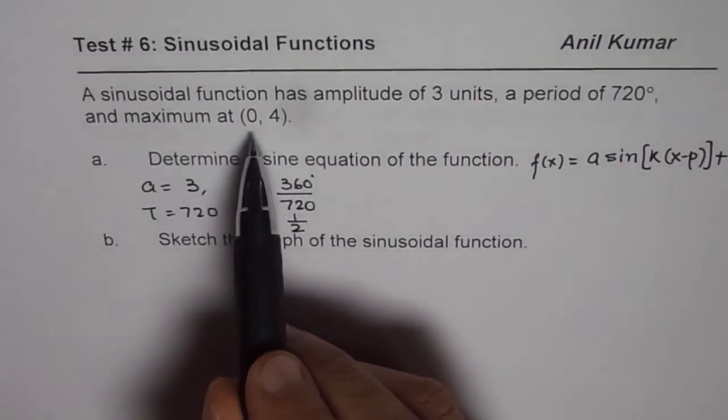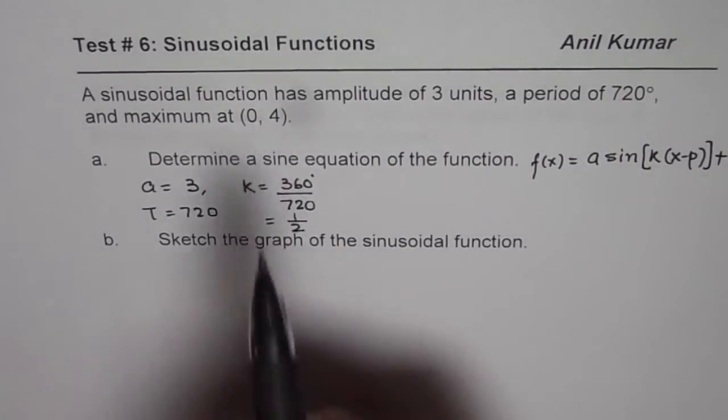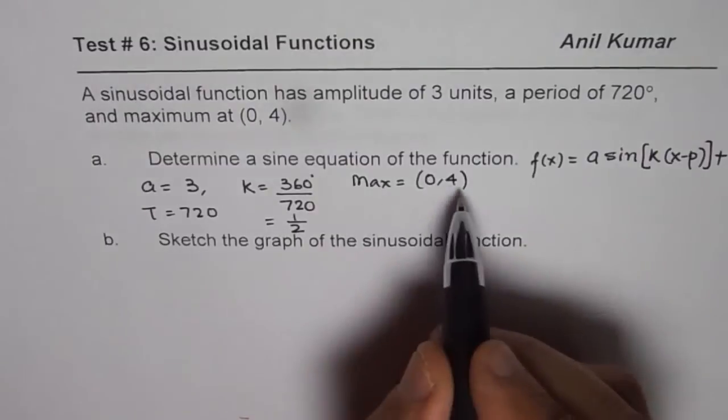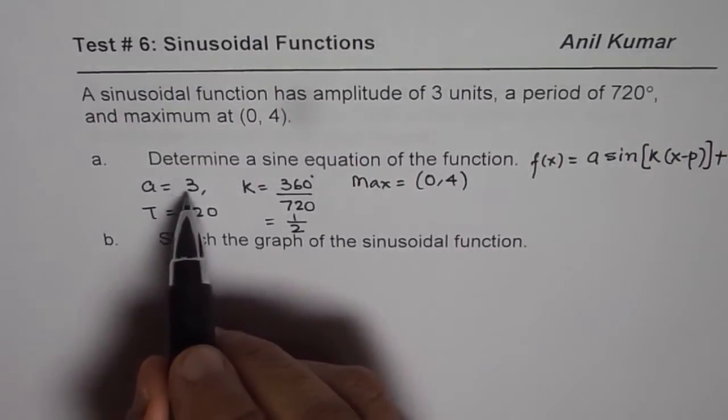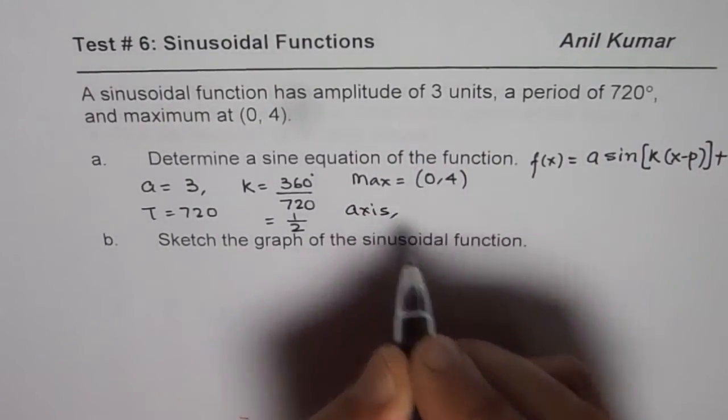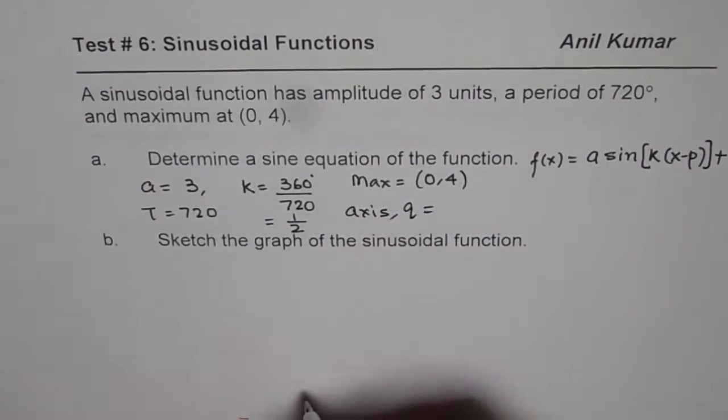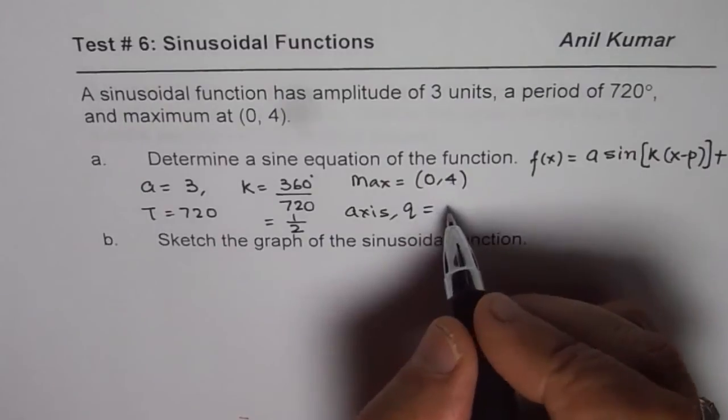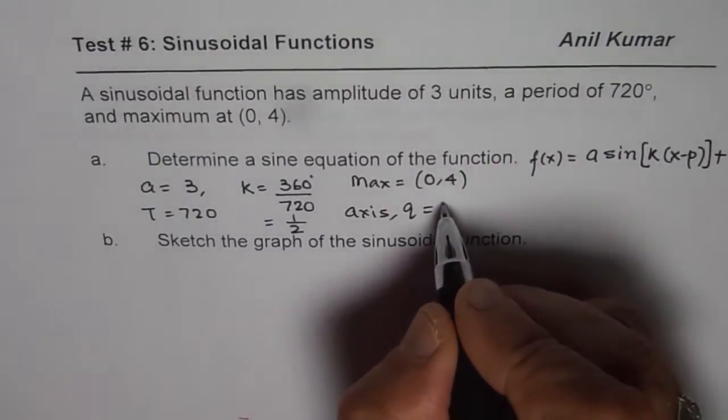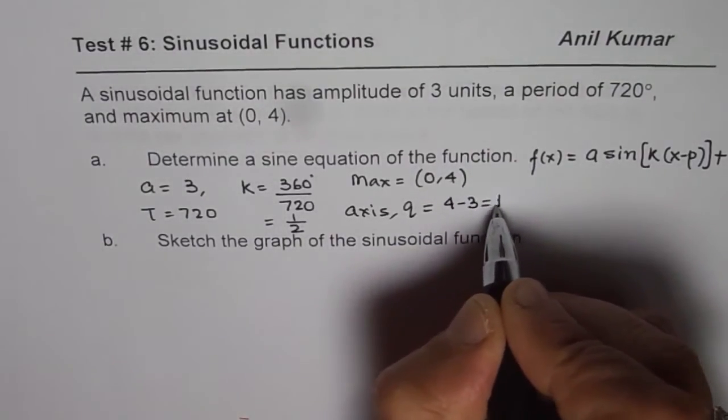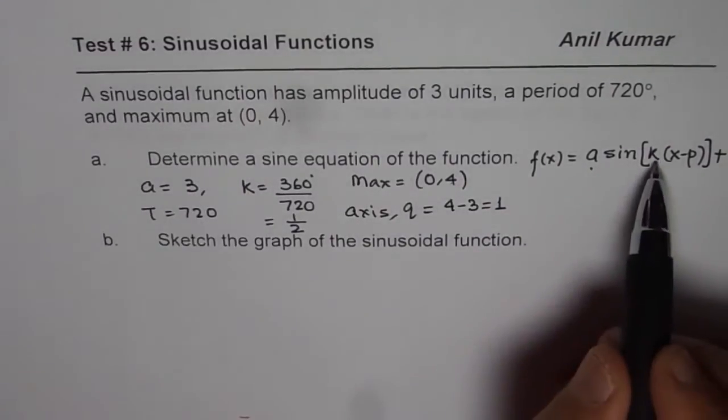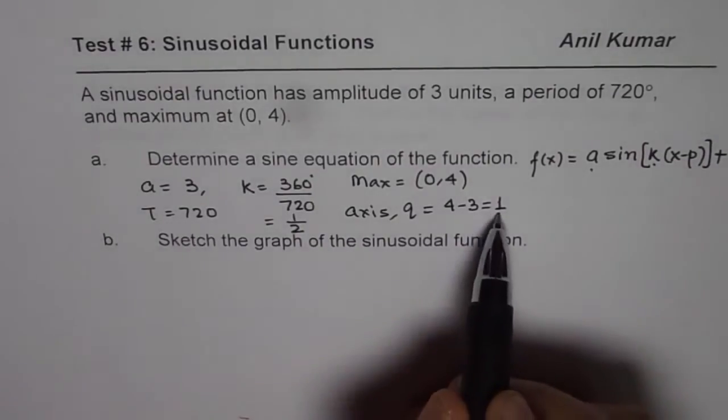Maximum at (0,4). That means the sine wave starts with a maximum. At origin it is maximum of 4. Since amplitude is 3 and maximum is 4, it means what is the axis. Axis q should be equal to how much? It is difference of maximum and the amplitude. Because amplitude is how much the wave could be from the axis. So, it is 4 minus 3 which equals 1.